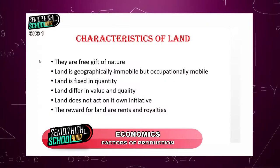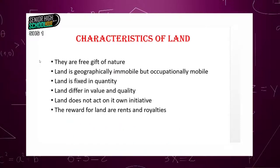Land is geographically immobile but occupationally mobile. This particular feature is directly focused on the bare land itself. Geographically, you cannot move land from one place to another. For example, if you are in city A and you come from city B where you have lots of land, you want to move it to city A — it wouldn't be possible. Nobody has been able to move land from one place to another. That explains the fact that land is geographically immobile.